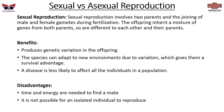There are two broad types of reproduction: sexual reproduction and asexual reproduction. Sexual reproduction involves two parents and the joining of male and female gametes — their alleles connected together during fertilization. The offspring inherit a mixture of genes from both parents, so they are different from each other and from their parents. This produces a lot of genetic variation. Species can adapt to new environments due to variation, giving them a survival advantage, and a disease is less likely to affect all individuals in a population. However, time and energy are needed to find a mate, and sexual reproduction takes more time and energy.